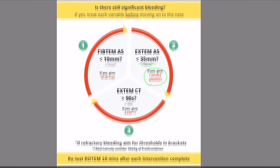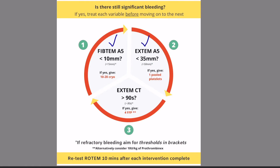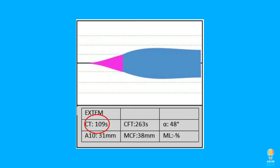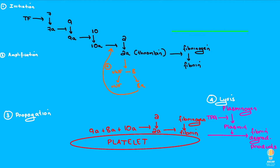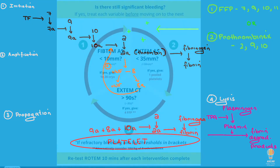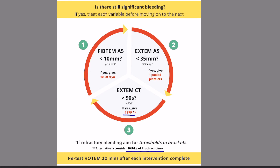Step 3: once your FibTem A5 and XTem A5 have been corrected, we can move on to looking at our XTem clotting time — how long it takes for our clot to start to form, the initiation part of our system. A long XTem CT of over 90 seconds indicates a deficiency in clotting factors. If this is the case, guidelines would suggest 4 units of FFP, and some institutions would support a modest dose of prothrombinex, for example, 10 units per kilogram.